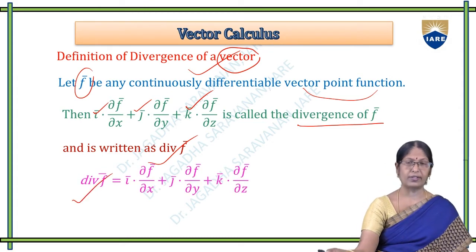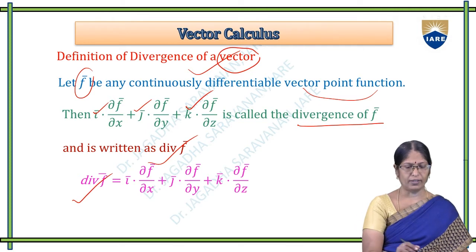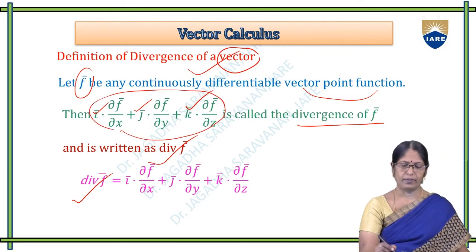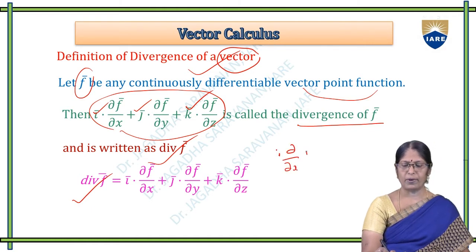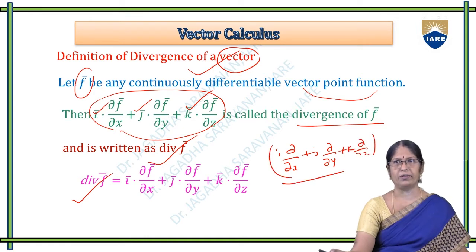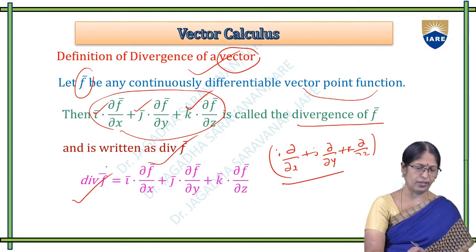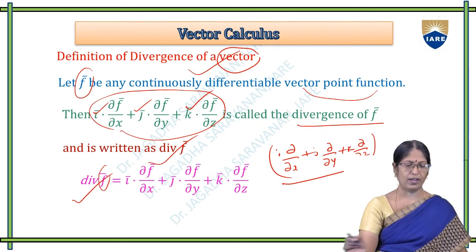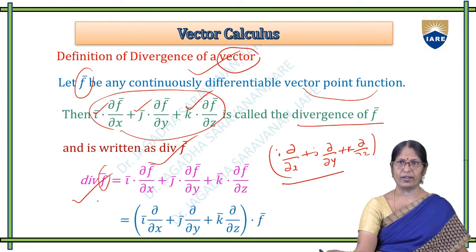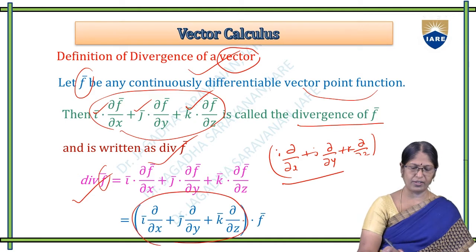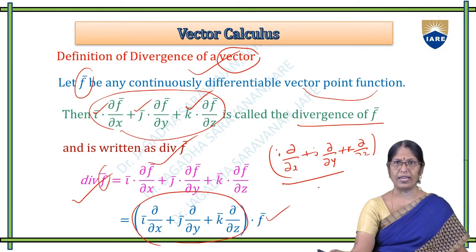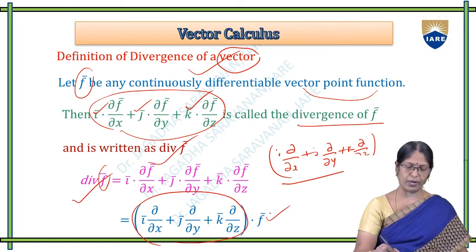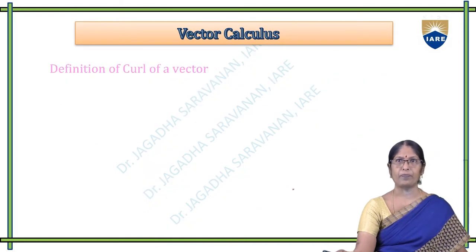So div F is nothing but the gradient operator (I·∂/∂x + J·∂/∂y + K·∂/∂z) applied via dot product to the vector function F. That is, the gradient dot product with the vector function F is nothing but the divergence of that particular vector.